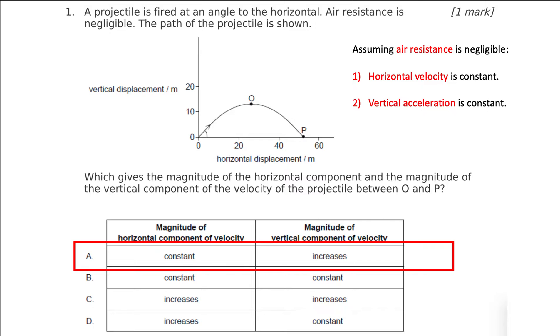Therefore, we have constant horizontal velocity and increased vertical velocity — increased referring to the magnitude here — and therefore the answer is A.